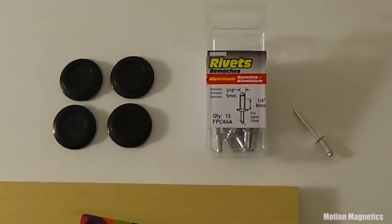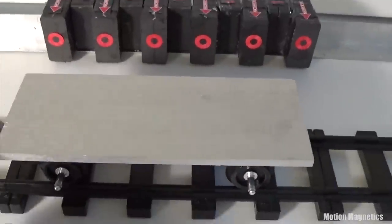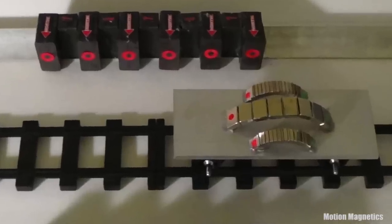In assembling carts for linear magnetic motor tracks, I found that G gauge train wheel assemblies contain at least a small amount of metal.